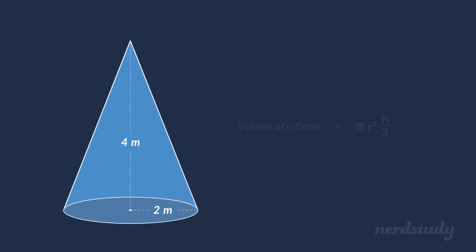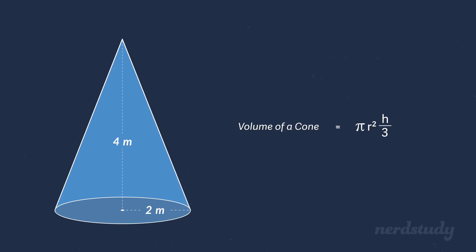So the volume of this cone is fairly easy to get. We just need to remember the formula: pi r squared times h over 3. Now our diagram provides us with both the radius and the height of the cone.